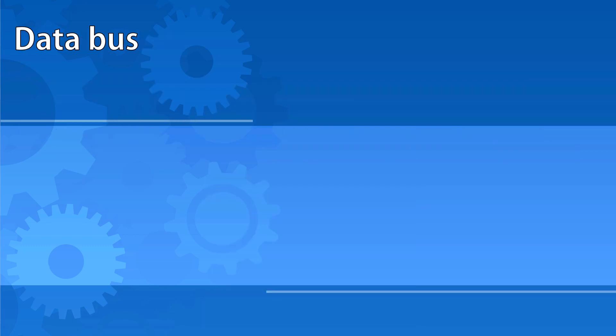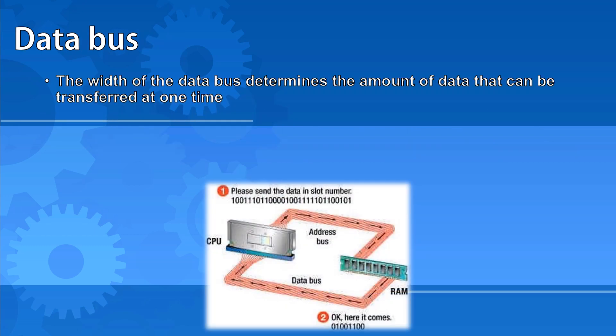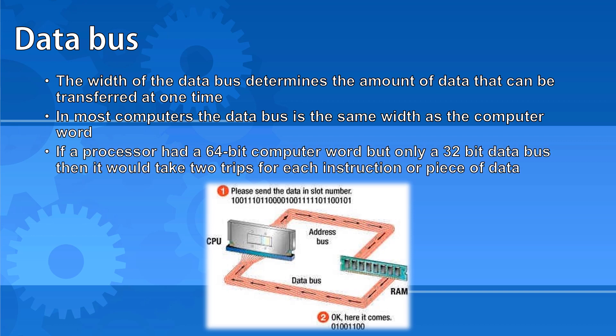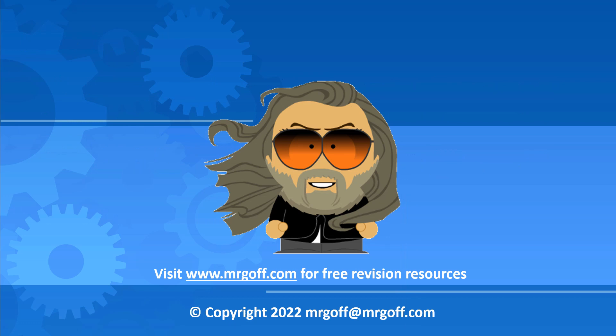The width of the data bus determines the amount of data that can be transferred at one time. In most computers, the data bus is the same width as the computer word. However, if a processor had a 64-bit computer word but only a 32-bit data bus, then it would take two trips for each instruction or piece of data to be fetched.